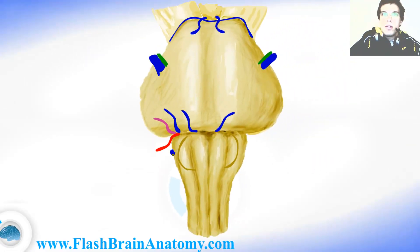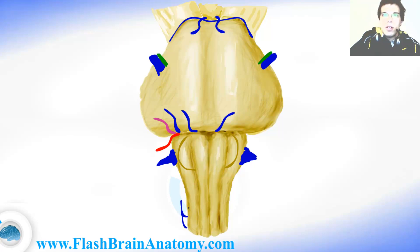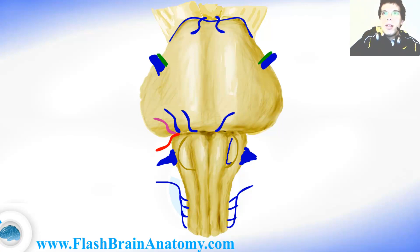Another nerve — the 10th cranial nerve is here and it is called the vagus. Same on the other side. More caudal from the vagus we have the accessory nerve, coming from the anterolateral sulcus. That means between the olivary body and the pyramid is the hypoglossal nerve.